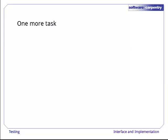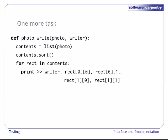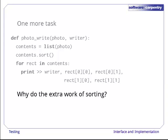In order to make output testable, though, there's one more thing we have to do. Here's a possible implementation of Photowrite2. It puts the rectangles in the photo into a list, sorts that list, then writes the rectangles one by one. This is simple enough, but why do the extra work of sorting? Why not just loop over the set and write the rectangles out directly? Please take a moment and see if you can think of the reason.